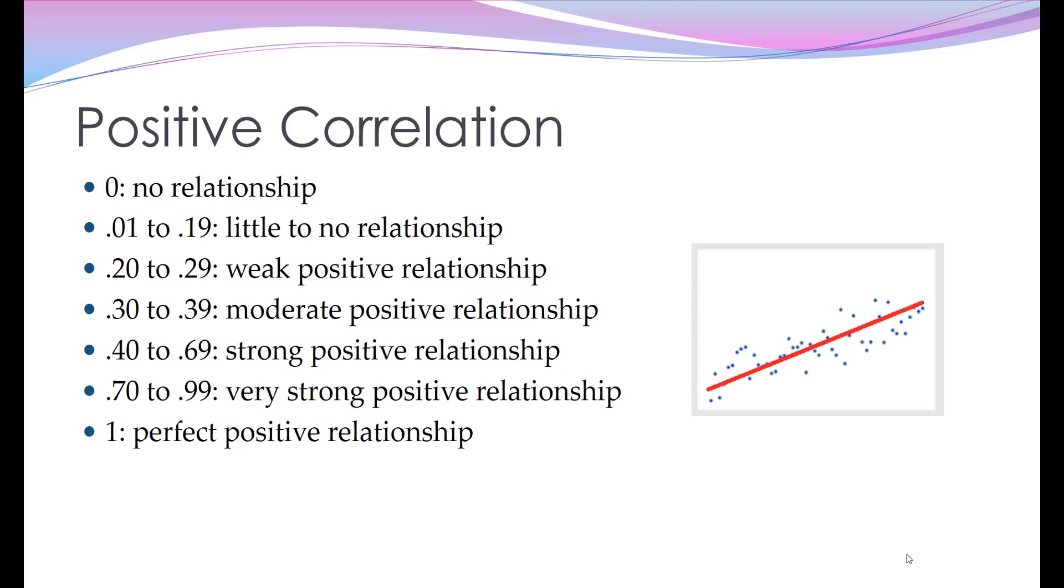The graphic on the right of the screen here shows when you use a scatter chart, which is the best kind of chart to graph correlations, this will show you what you would expect to see with a positive correlation with a nice trending line.